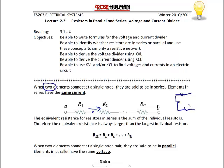Here we have three resistors — a 2 ohm, a 3 ohm, and a 5 ohm resistor. They're definitely in series because only two of them meet at each node. The equivalent resistance RAB would be 2 plus 3 plus 5, or 10 ohms.